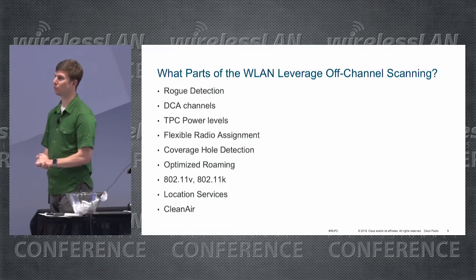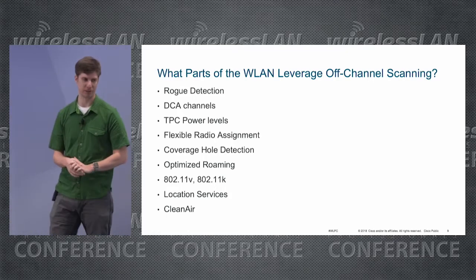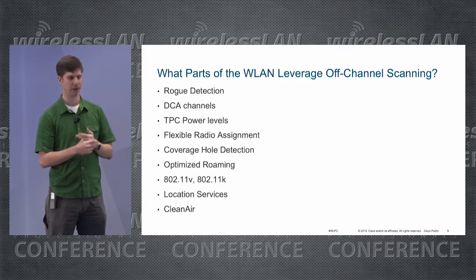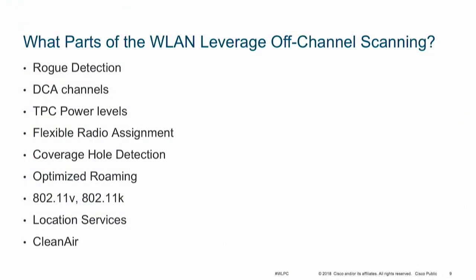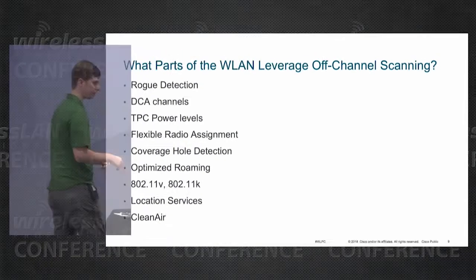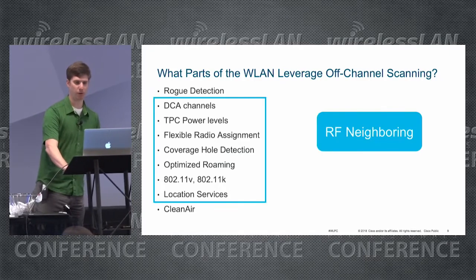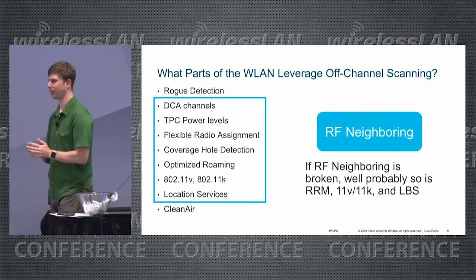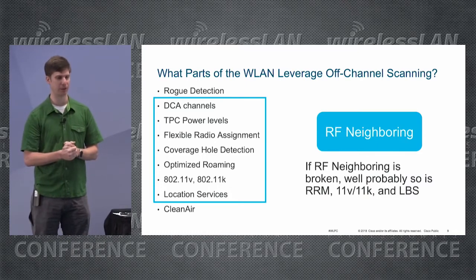What leverages off-channel scanning? You have rogue detection, all parts of RRM — dynamic channel assignment, transmit power control, flexible radio assignment, coverage hole detection. There's a feature called optimized roaming, and 802.11v messages and 802.11k BSS transition also use off-channel scanning — the neighbor lists in those rely on it. There's location services, and CleanAir or interference detection also relies on off-channel scanning. Off-channel scanning is how RF neighboring works, and all these things rely on RF neighboring. Basically, if RF neighboring is broken, a large portion of your WLAN is probably broken too.